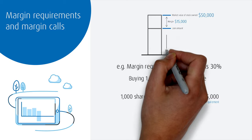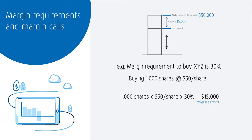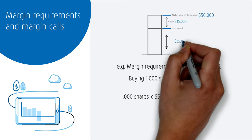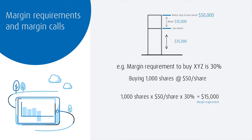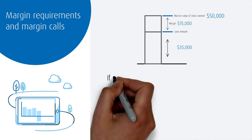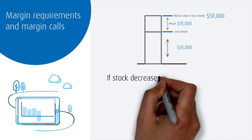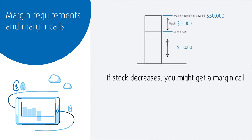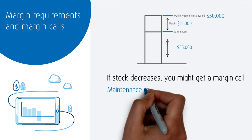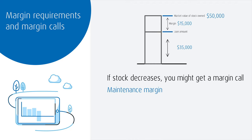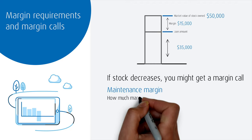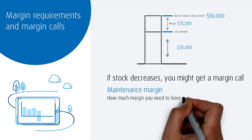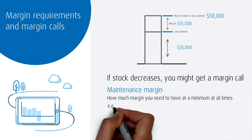You are allowed to borrow the other 70%, or $35,000, from the brokerage. If the value of the stock decreases, you might run into the risk of a margin call. The maintenance margin requirement tells you how much margin you need to have at a minimum at all times.